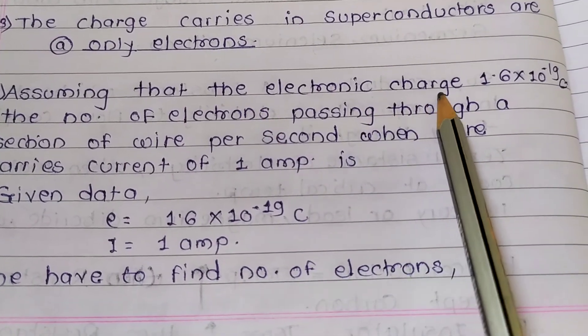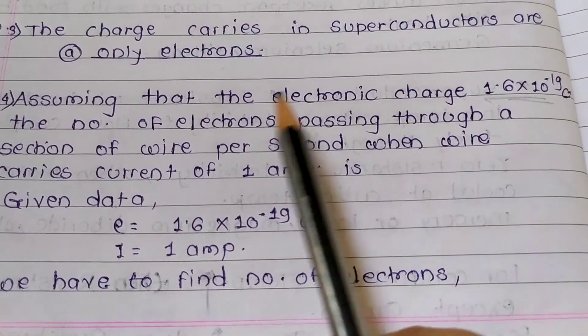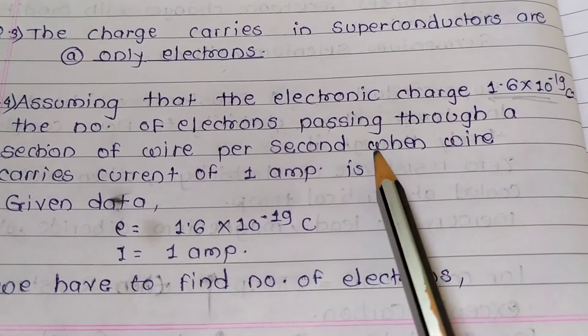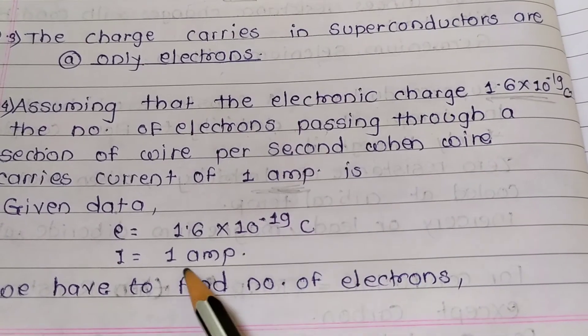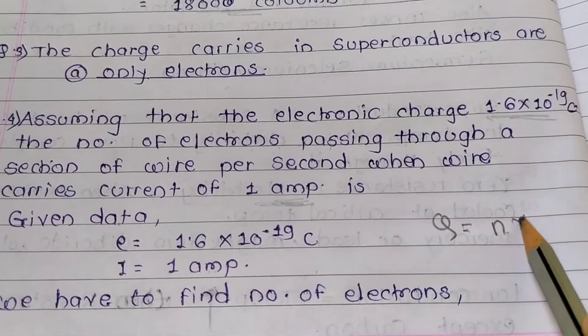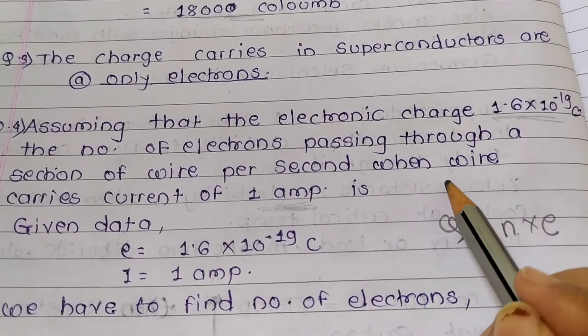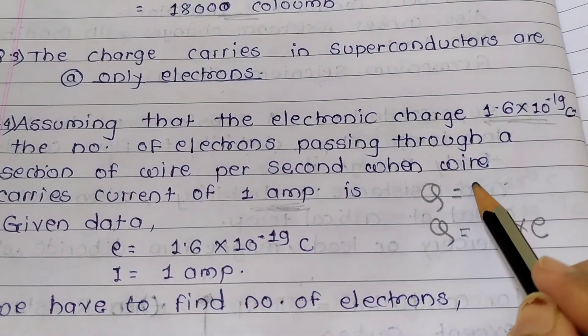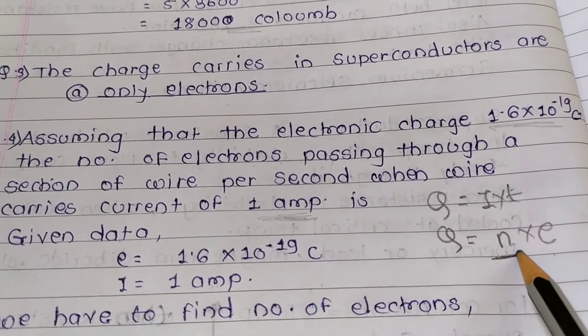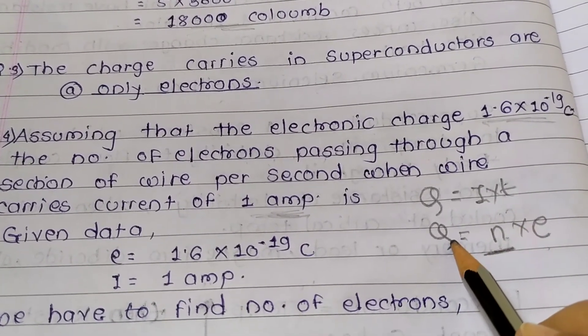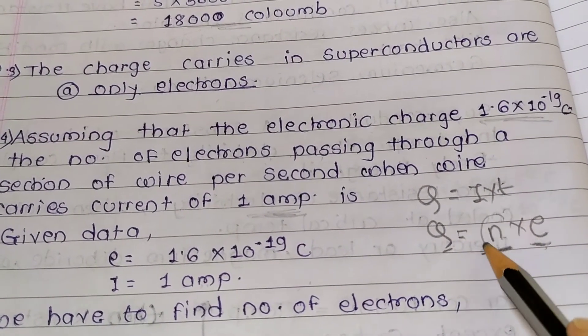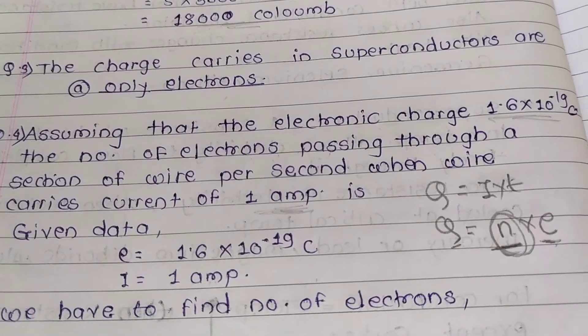Assuming the electronic charge E, find the number of electrons passing through a section of wire per second when wire carries current of 1 ampere. We have to find number of electrons. Formula: Q = N × E. Our first formula Q = I × T, and second Q = N × E, number of electrons. To find number of electrons, Q is 1 coulomb, and E is electronic charge. Then we can find easily number of electrons.